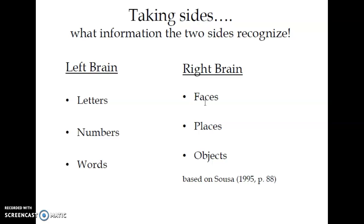Right brain people think outside the box, outside of ordinary things. They look at the face, look at the place, look at the objects differently from other people.